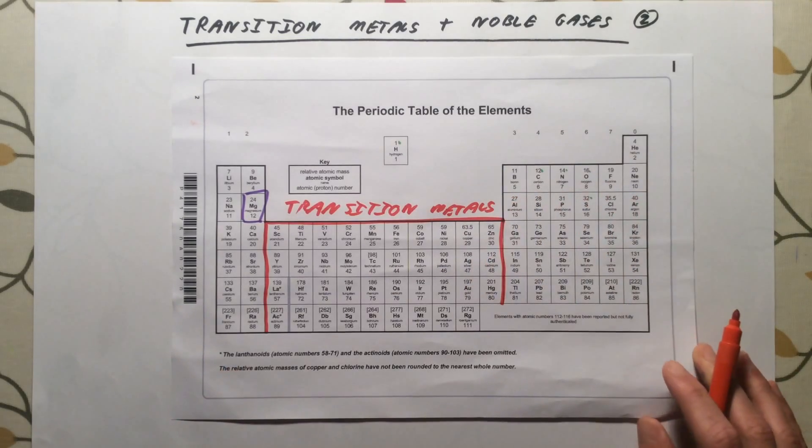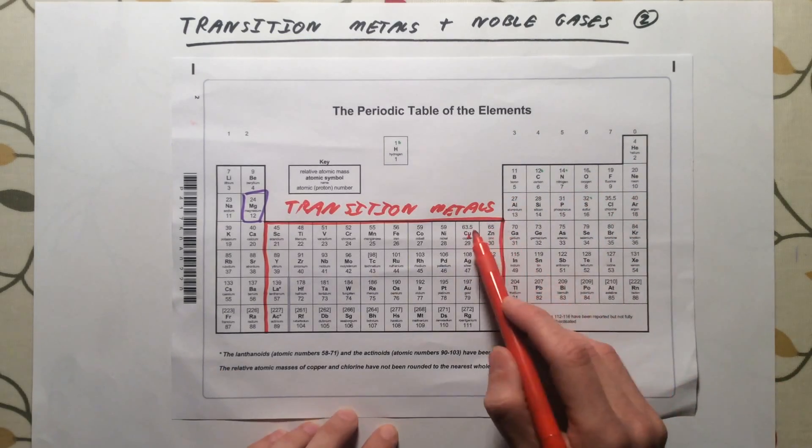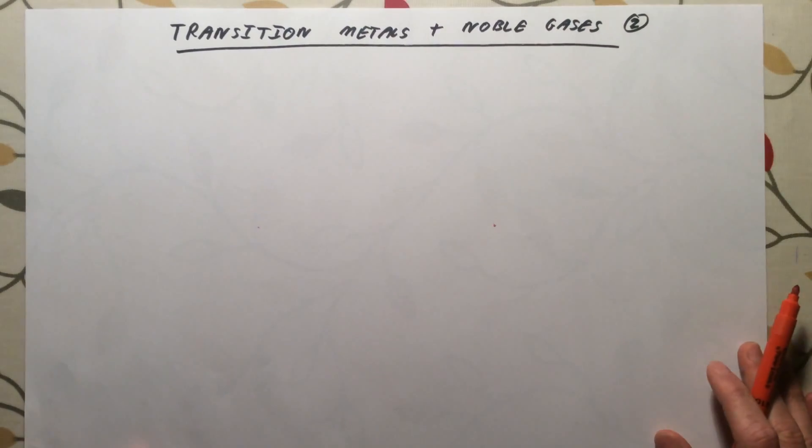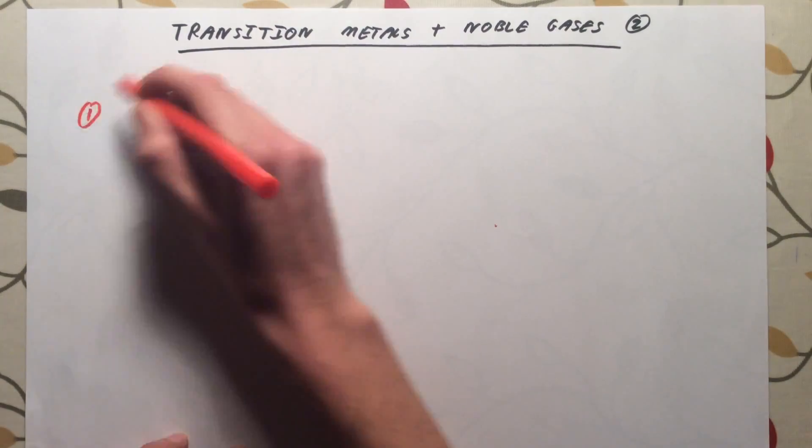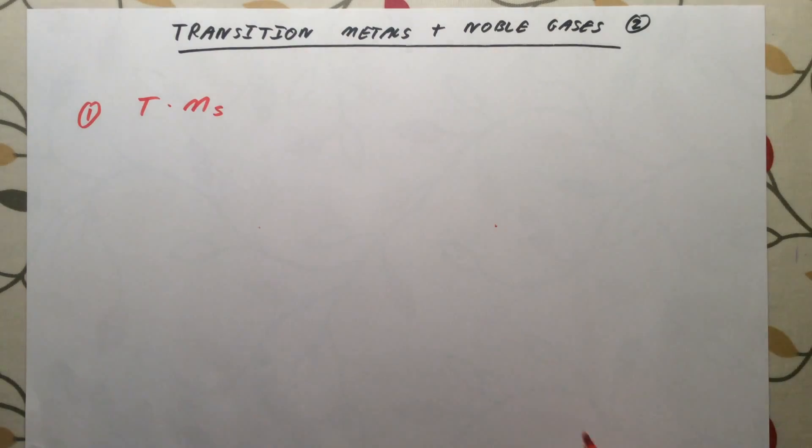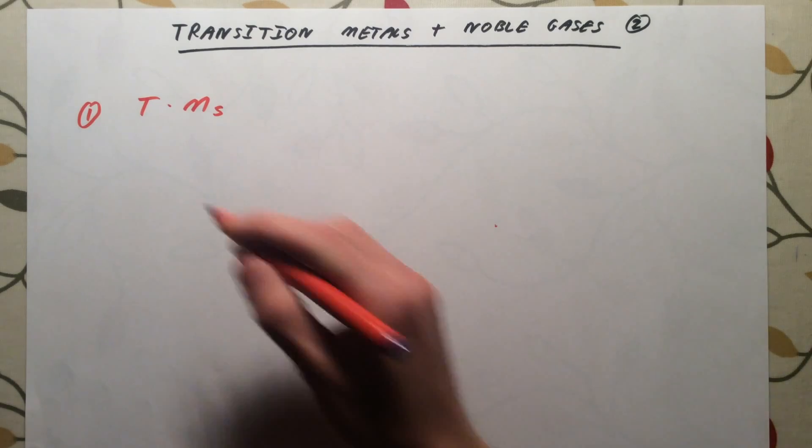So for example, if you were asked what section or group of the periodic table copper is in, copper is here, therefore it is a transition metal. And we just need to know a little bit of information about this. So our transition metals, or TMs, firstly, they for the most part have a very high melting point.